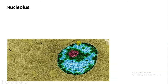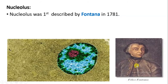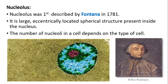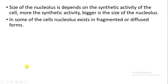Next we will talk about the nucleolus. This is the nucleus and there is a dense structure present called as nucleolus. The nucleolus was first described by the scientist Fontana in 1781. It is large and located towards the periphery — towards one side of the nucleus — that is why it is called eccentric, and it is always inside the nucleus. Some cells can have more than one nucleolus, and the number depends upon the type of the cell.